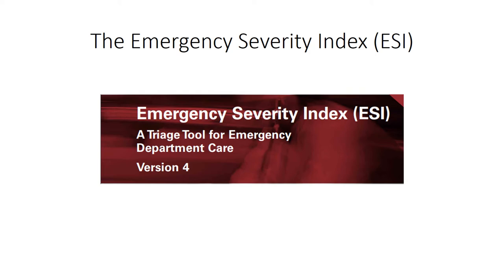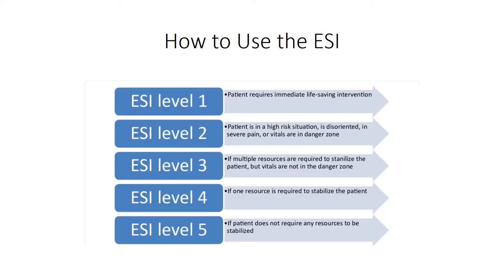Introducing the Emergency Severity Index, or ESI. Created by a few physicians, this tiered system is a tool, or type of algorithm, made to sort patients based on the severity of their symptoms. Previous versions of the ESI was a 3-level system. Now, in its 4th version, patients are currently ranked in a 5-tier system, with ESI Level 1 taking priority over the other levels. I will be referring to these different tiers as either ESI Level or Priority Level, and I will go into the different levels in the next slides.